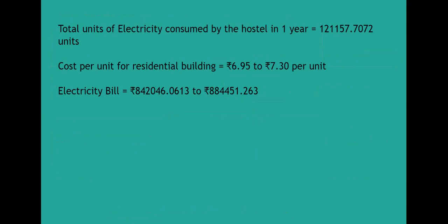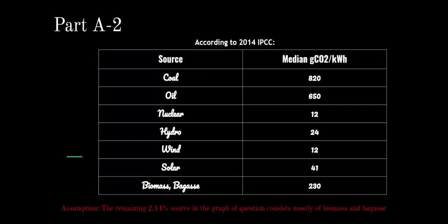For detailed calculations, you can check the link. Now we talk about carbon footprint. The CO2 emission from coal is 820 g/kWh, from oil is 650, nuclear is 12, hydroelectricity is 24, wind is 12, solar is 41, and biomass and biogas is 240. We assume that the remaining 2.14% of the energy mix consists mostly of biomass and biogas.